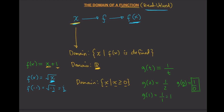That's the only number that produces an invalid output, so the domain would be all real numbers except zero. All other numbers will produce a valid output. So the domain is the set of all x in the real numbers such that x is not equal to zero.